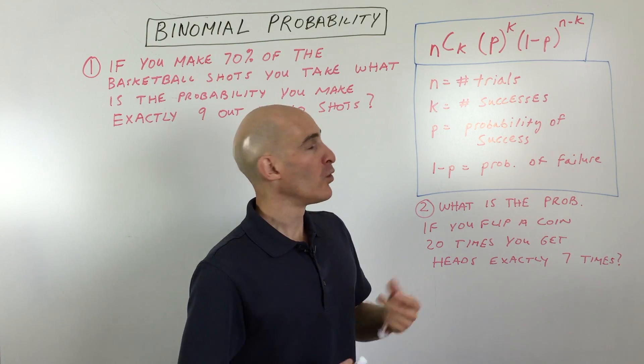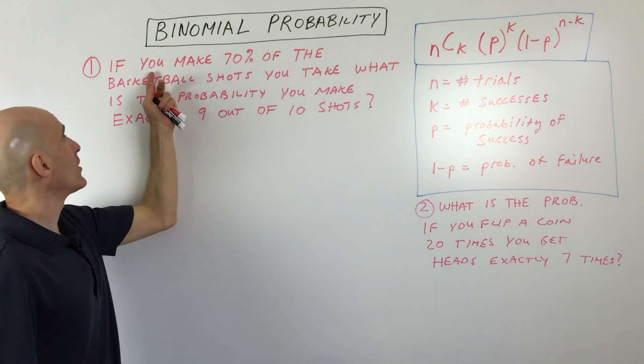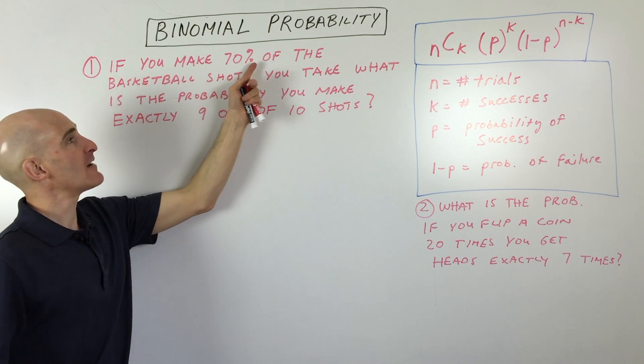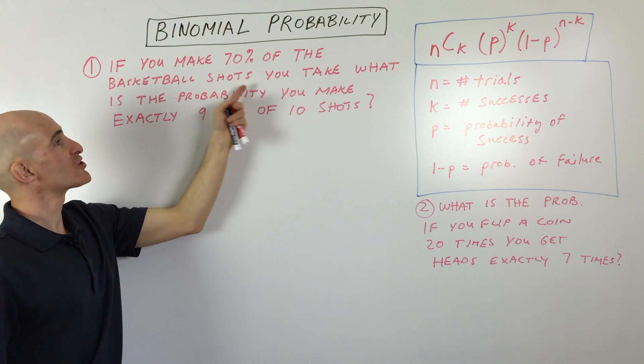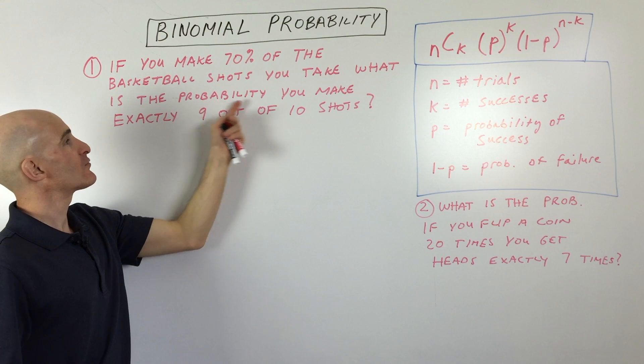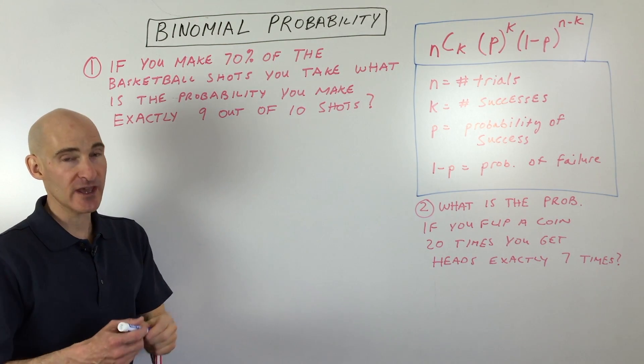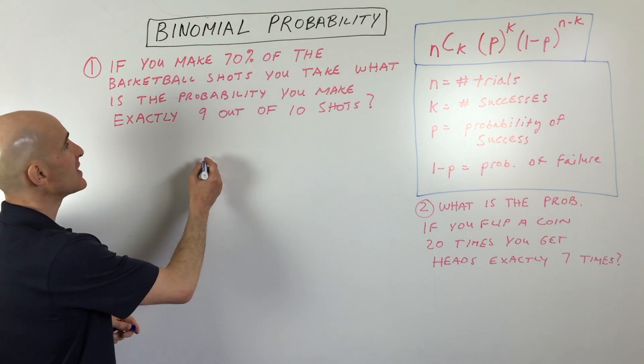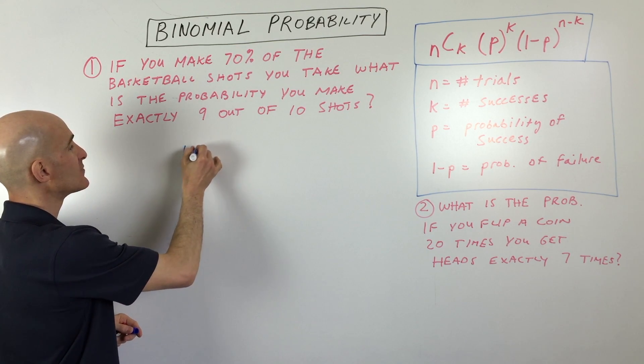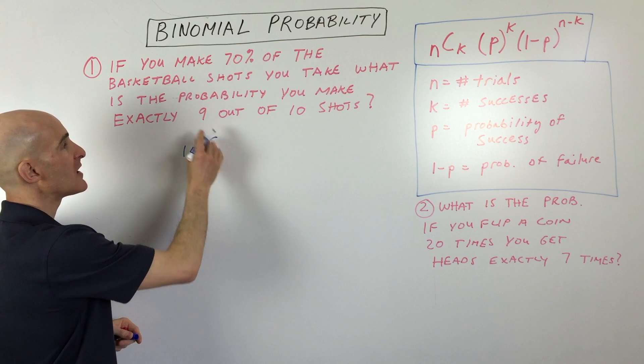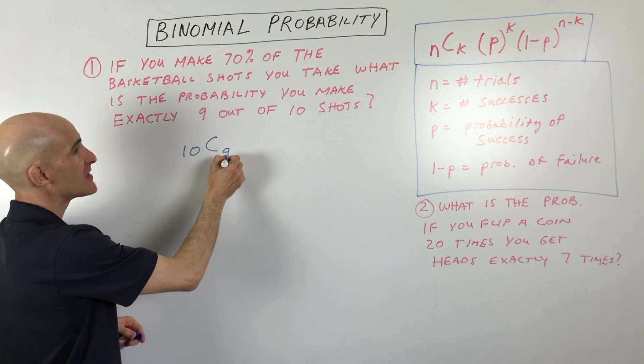So we'll look at some examples, I'll show you what I mean. Let's take a look at this first one. If you make 70% of the basketball shots you take, what is the probability that you make exactly nine out of 10 shots? So let's look at this one. Basically, you're taking 10 shots. So that's going to be 10 choose.